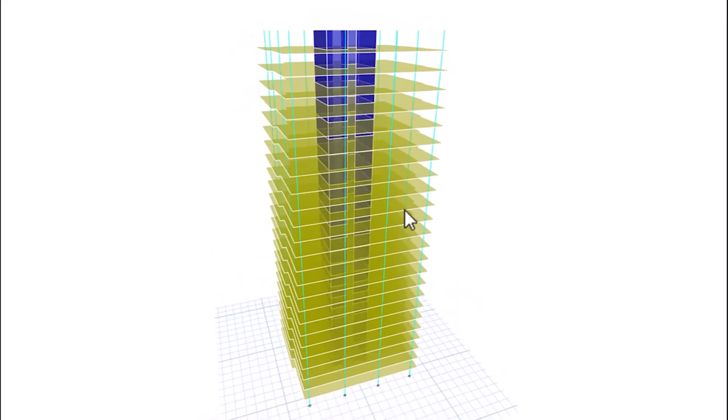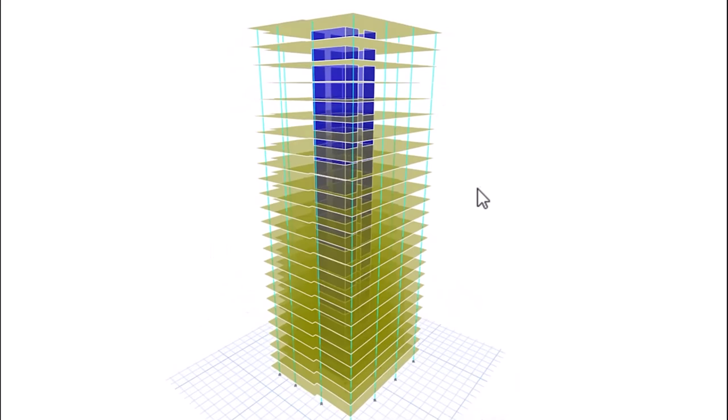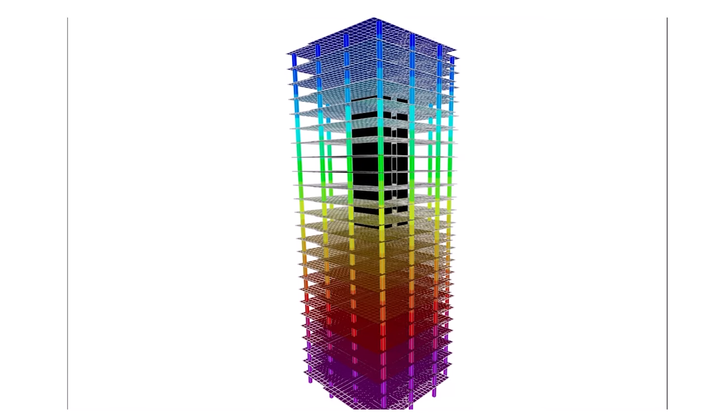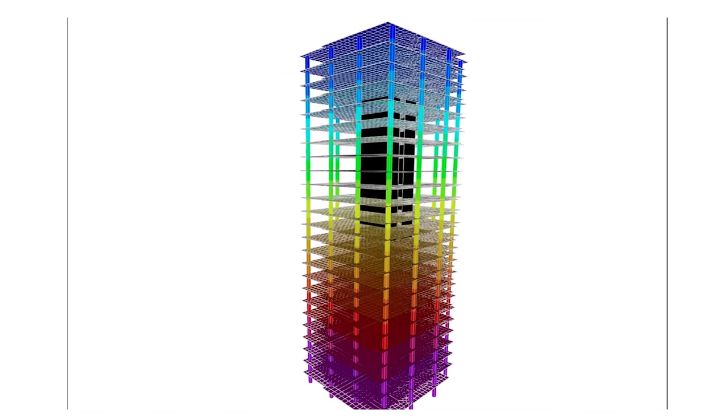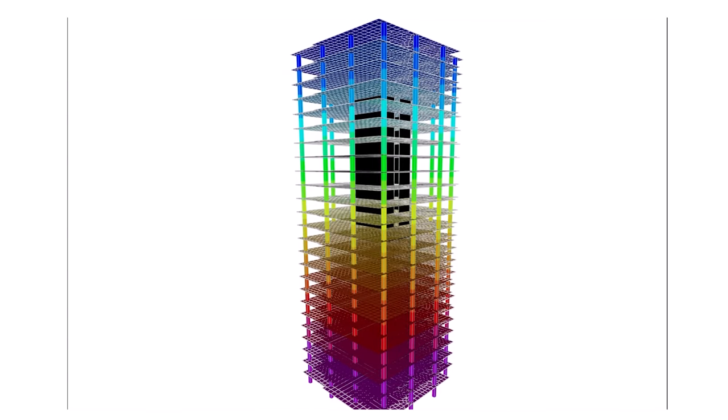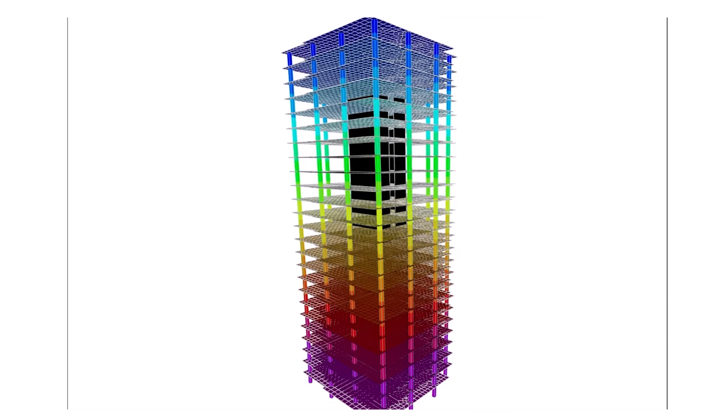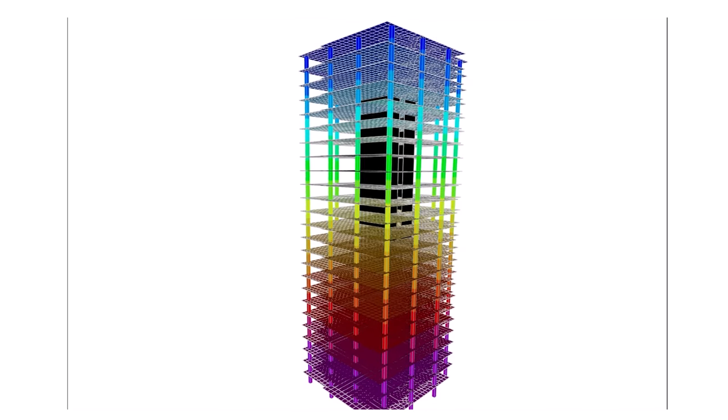This is a model of the concrete core walls with earthquake forces being applied to it. We're making sure the concrete core walls are not only strong enough to handle all of those forces, but we also want to make sure that the building doesn't sway too much — otherwise the people living in the building will get motion sickness whenever the wind blows.